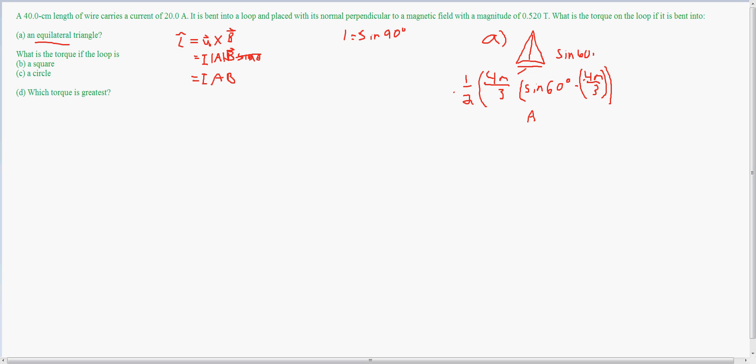And then I'll have an I of 20 amps, which is given in the problem, times the magnetic field, which is 0.52 tesla, which when you work it all out and plug everything in, is a torque equal to 0.08 newton meters.